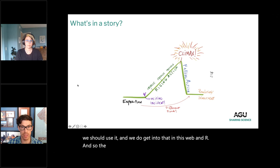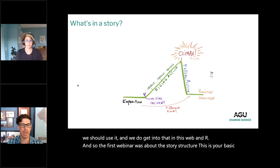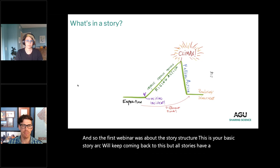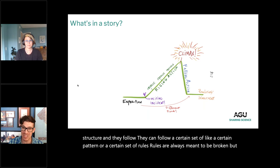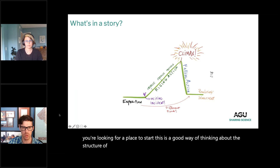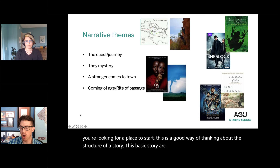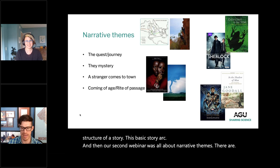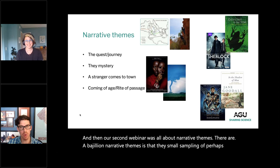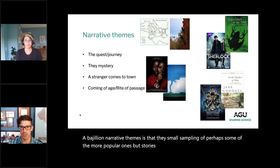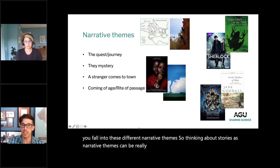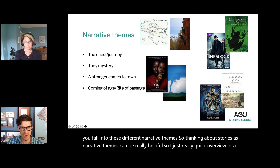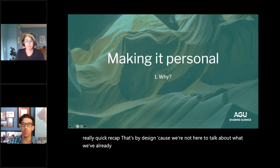The first webinar was about story structure — the basic story arc. All stories have a certain structure and can follow a certain pattern or set of rules, which are always meant to be broken, but it's a good place to start. The second webinar was about narrative themes — there are countless narrative themes, and thinking about stories as narrative themes can be really helpful. That's a quick recap — we're here to talk about new things today.